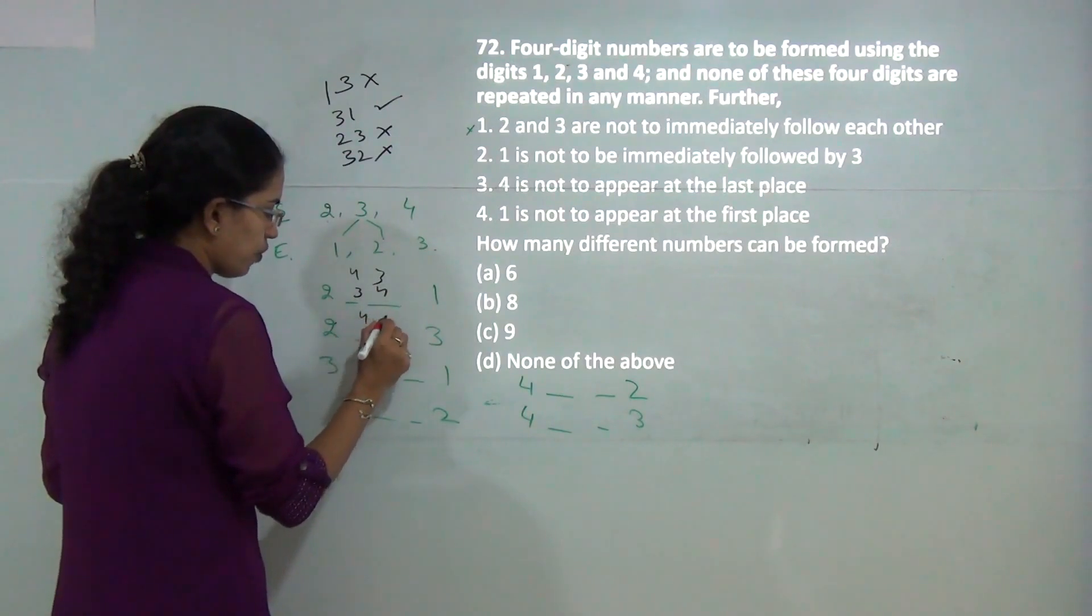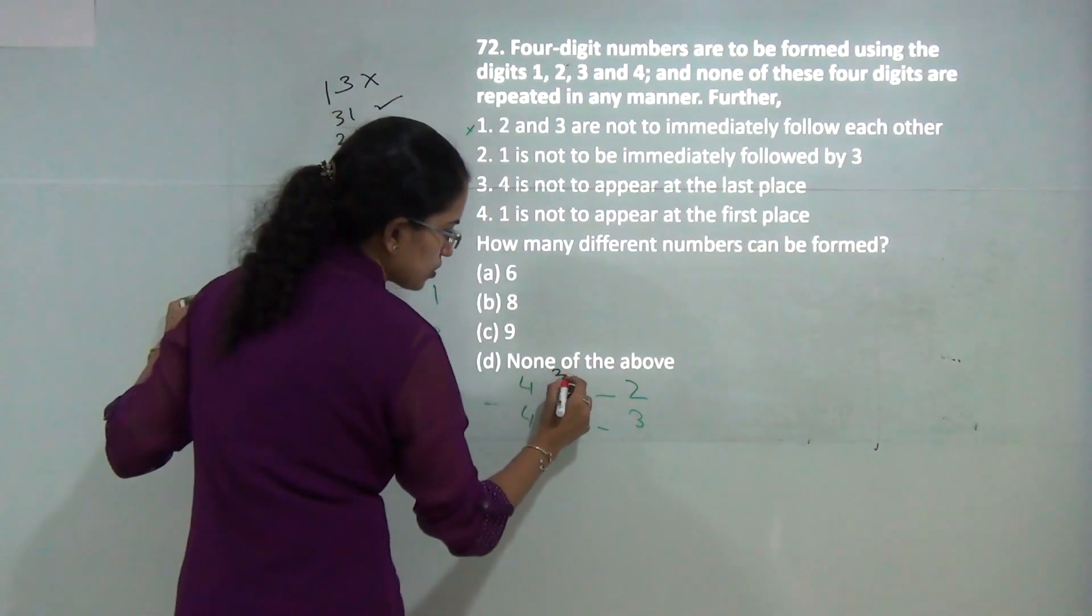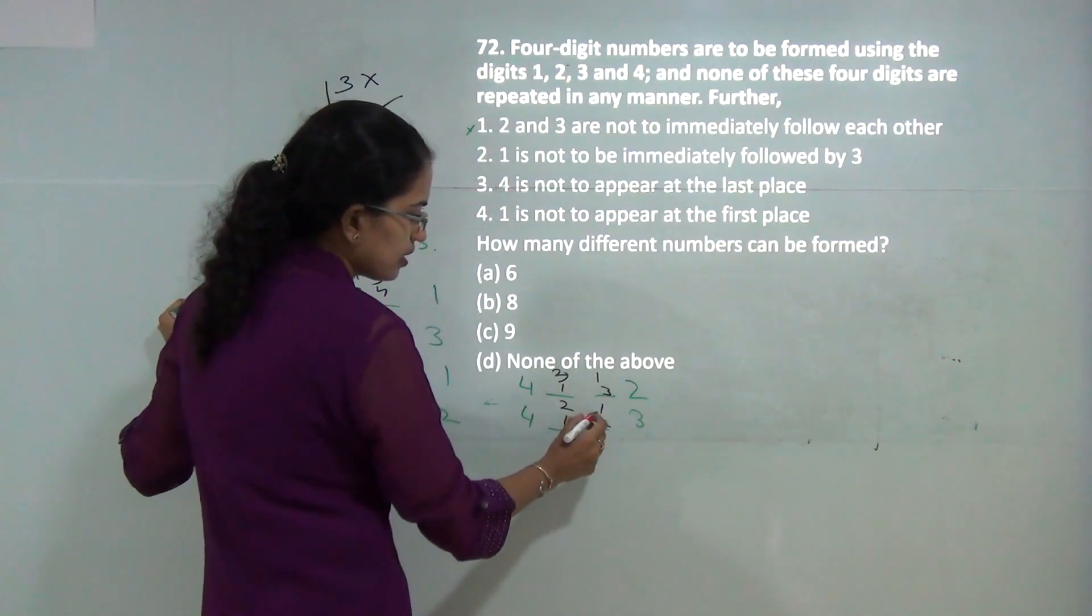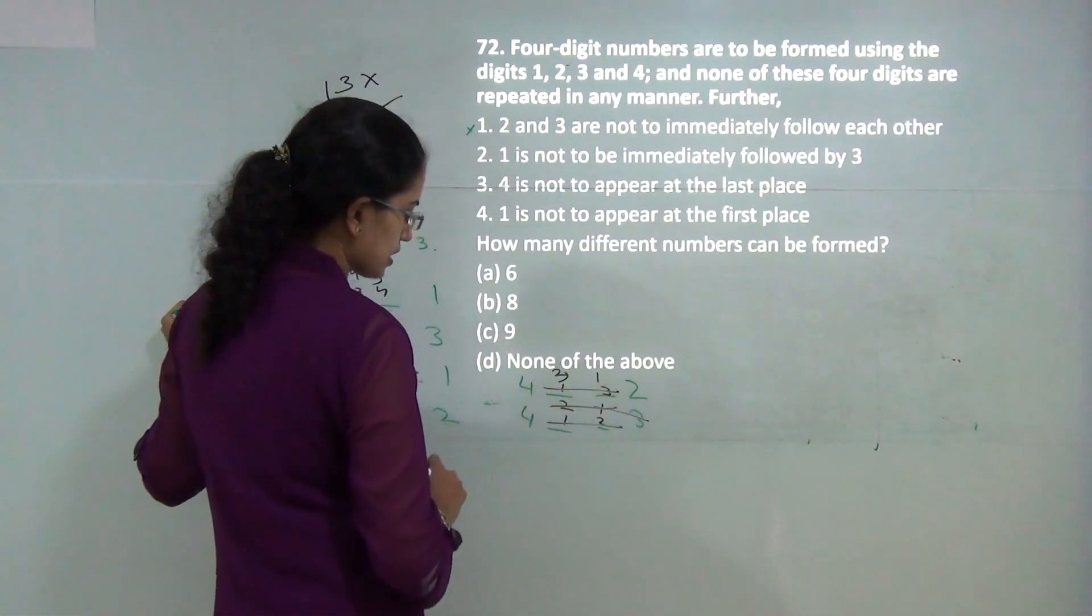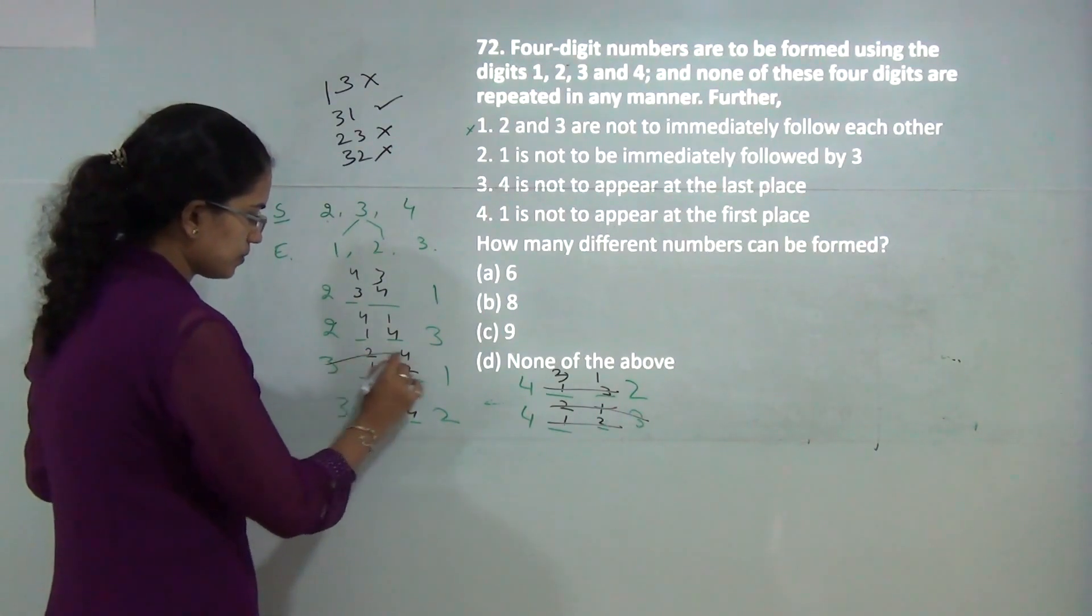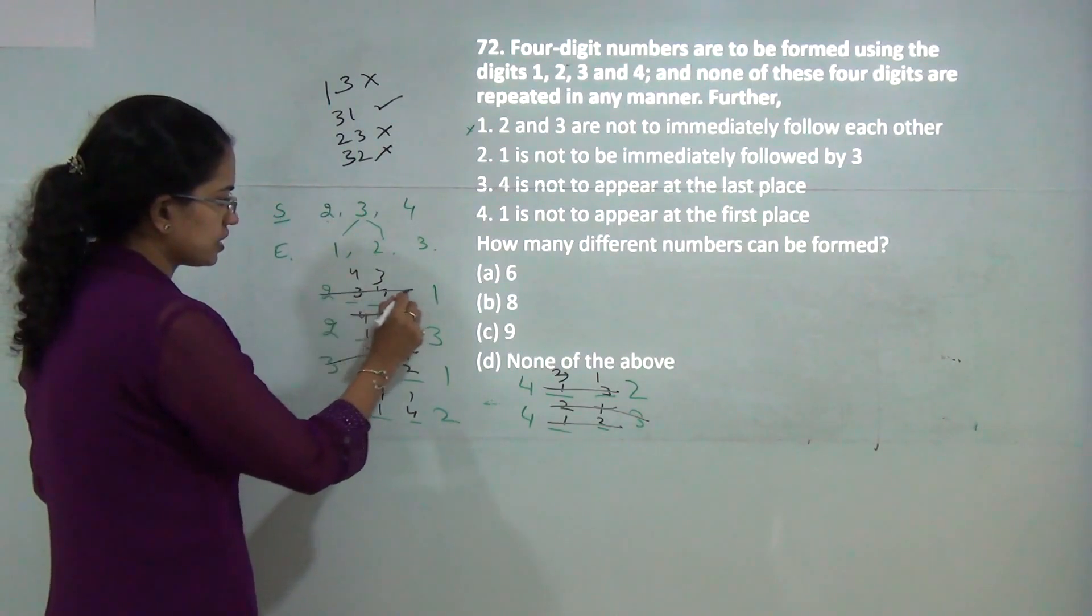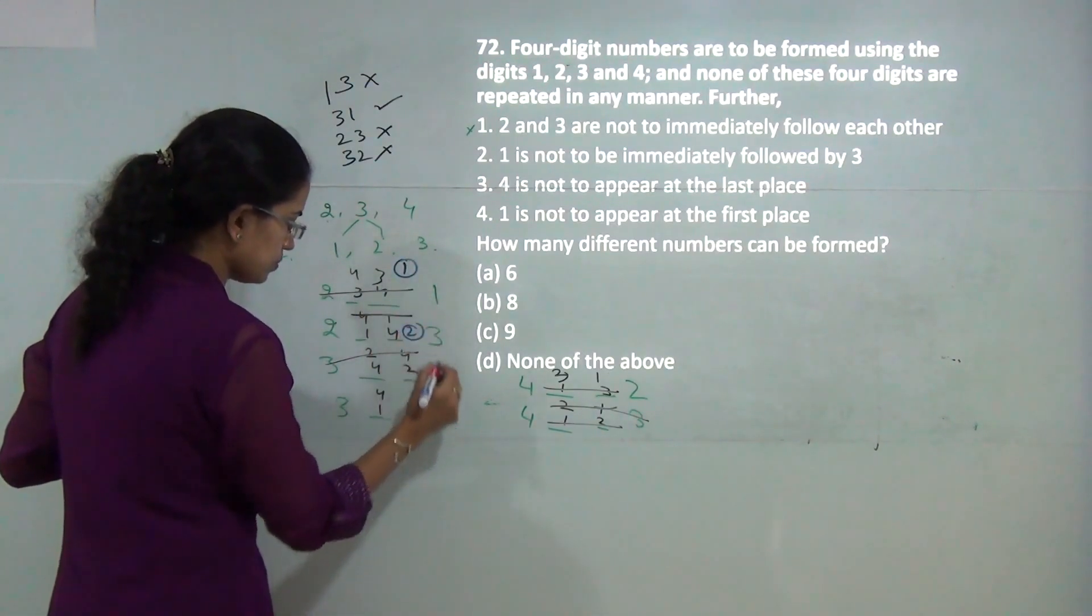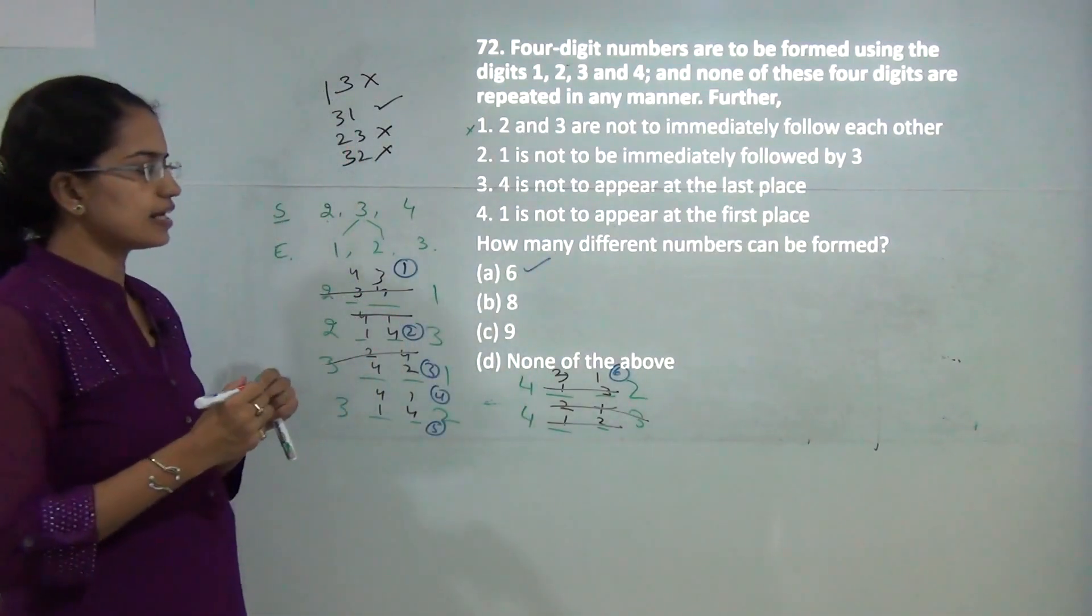Now checking which arrangements are allowed: 1 should not follow 3, but 3 can follow 1. Items 2 and 3 should not come together. Testing all combinations and eliminating invalid ones where 1 follows 3 or 2 and 3 are adjacent, we find 6 possible valid combinations are allowed. Answer is A, 6.